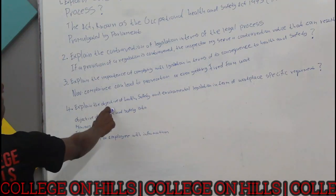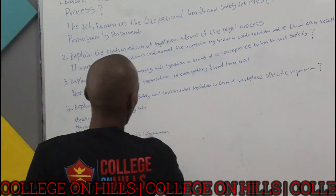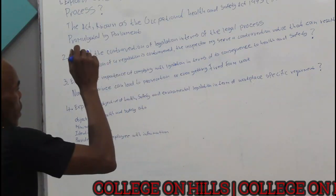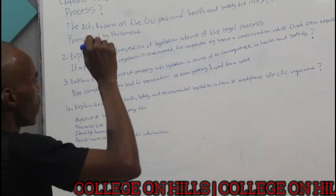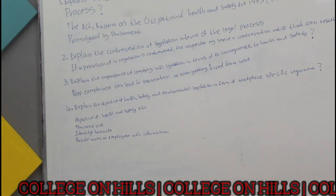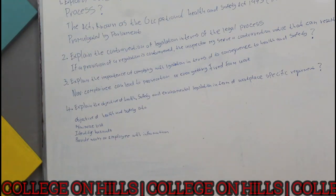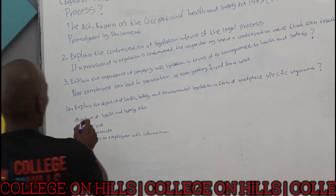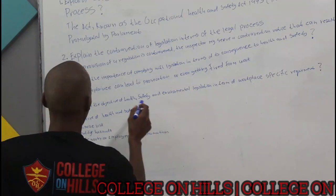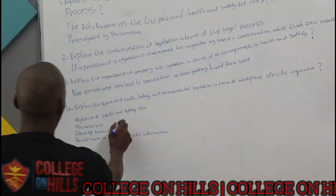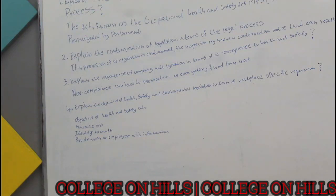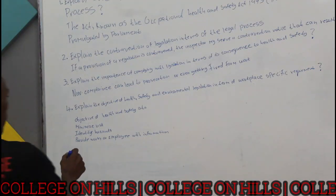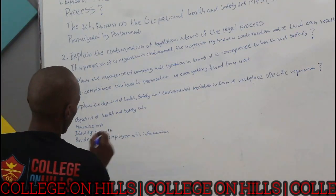Explain the objectives of health and safety and environmental legislation in terms of workplace-specific requirements. The objectives of health and safety are to minimize risks in a workplace and to identify hazards.